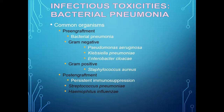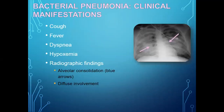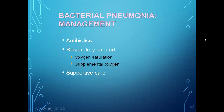Bacterial pneumonia: pre-engraftment organisms include gram-negative bacteria such as Pseudomonas, Klebsiella pneumoniae, and Enterobacter coli. Gram-positive: Staphylococcus aureus. Post-engraftment, persistent immunosuppression leads to Streptococcus pneumoniae and Haemophilus influenzae. Clinical manifestations: cough, fever, dyspnea, hypoxemia, and radiological findings of alveolar consolidation. Management: antibiotics, respiratory support, supplementary oxygen, and supportive care.